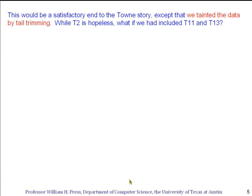So this would be a pretty clean result, a satisfactory end to the Towne story, except that there is a loose end left. And that loose end is that we originally did taint the data when we computed that probability distribution for R, because we decided rather ad hoc to leave out T2, T11, and T13. Now, T2, we can see, is hopeless. But what would we have gotten if we had included T11 and T13 from the very start?